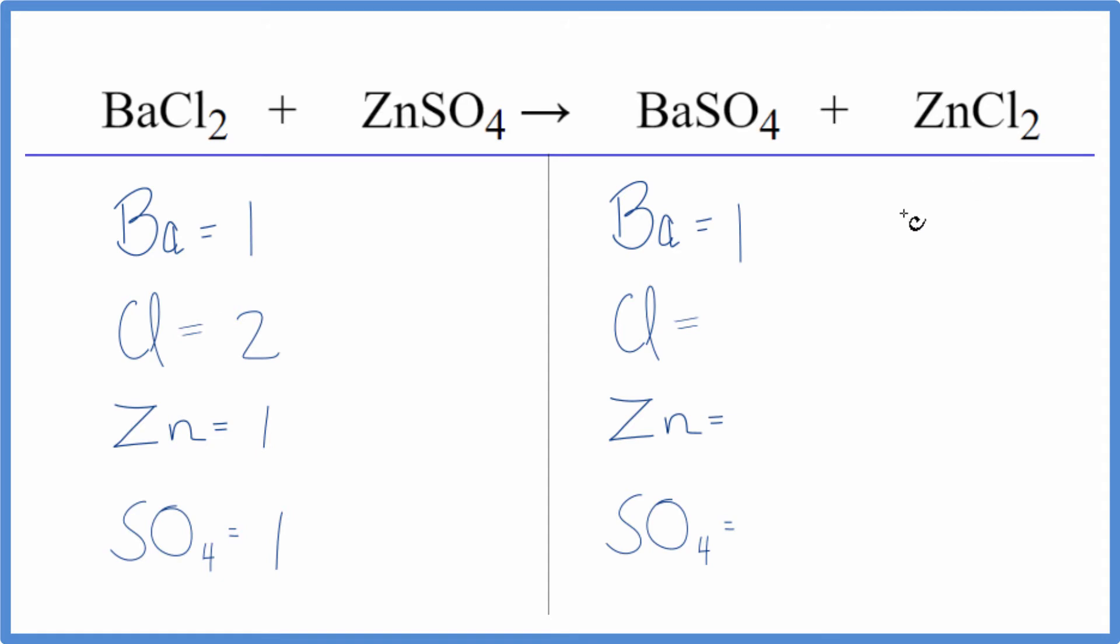We have one barium, two chlorines, one zinc. And then again, we have the sulfate ion here. So we just have one of those. And this equation is already balanced.